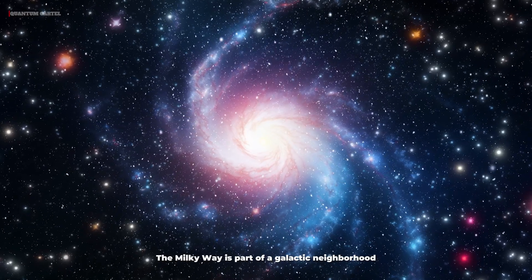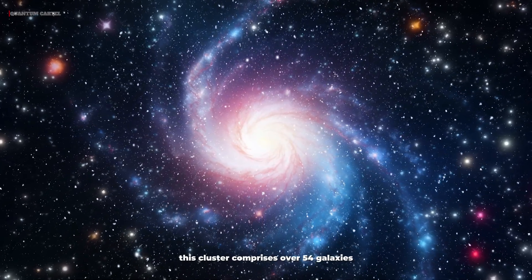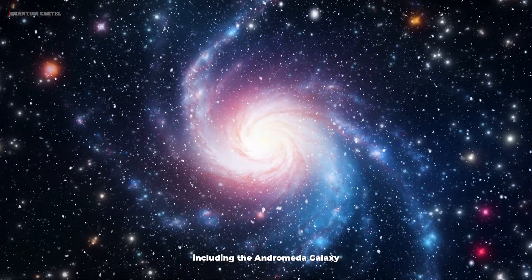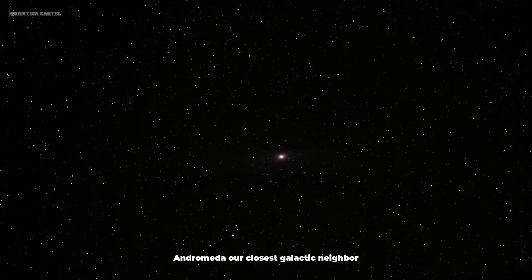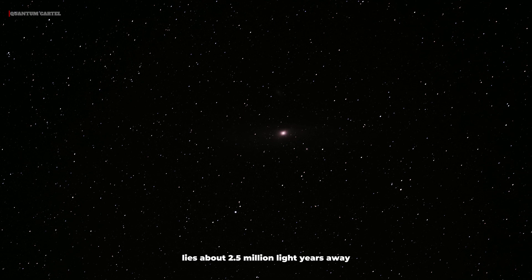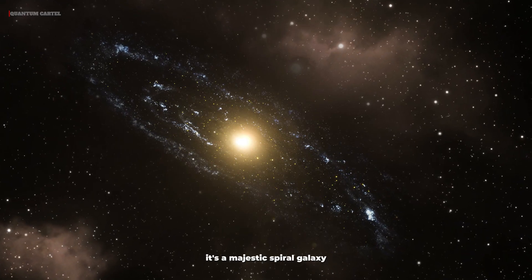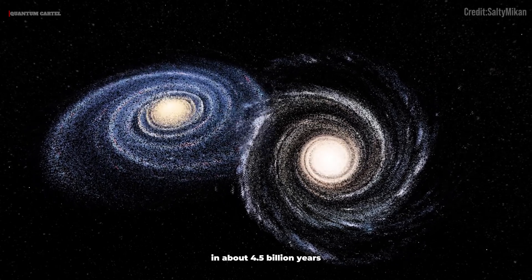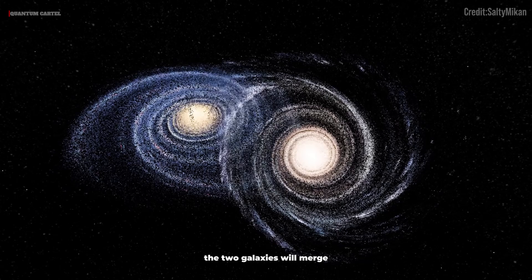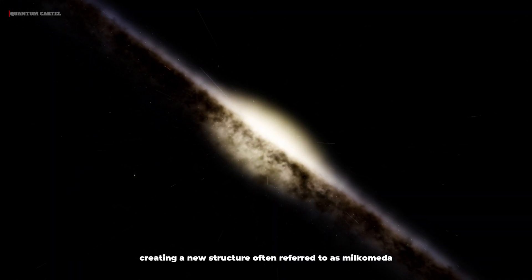The Milky Way is part of a galactic neighborhood known as the Local Group. This cluster comprises over 54 galaxies, including the Andromeda Galaxy and the Triangulum Galaxy. Andromeda, our closest galactic neighbor, lies about 2.5 million light-years away. It's a majestic spiral galaxy and is on a collision course with the Milky Way. In about 4.5 billion years, the two galaxies will merge, creating a new structure often referred to as Milkomeda.